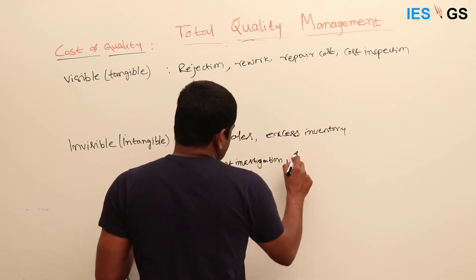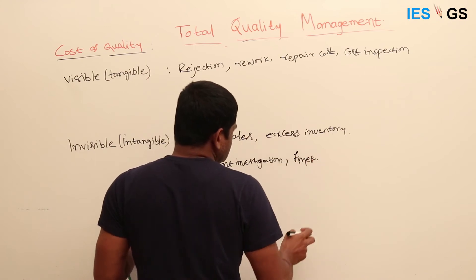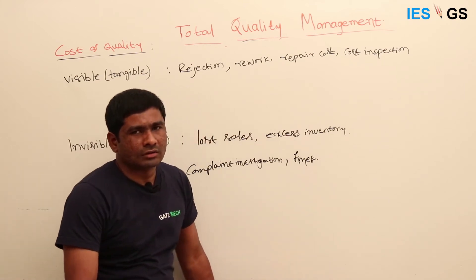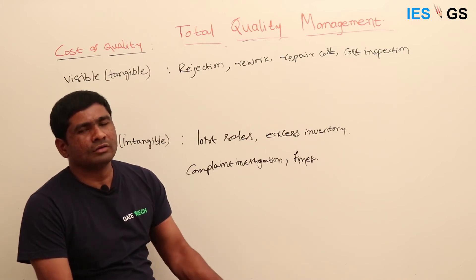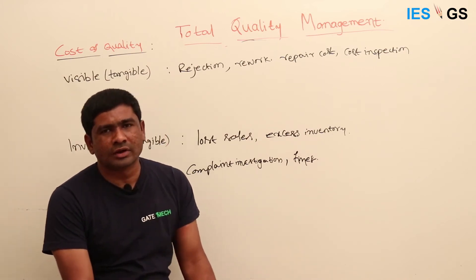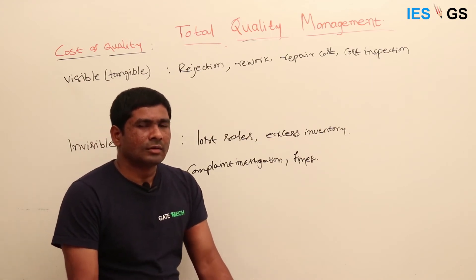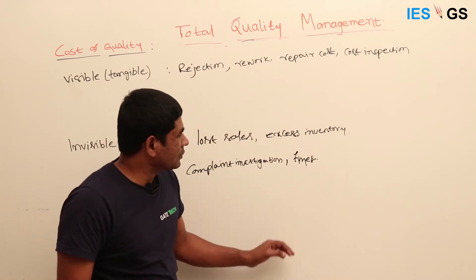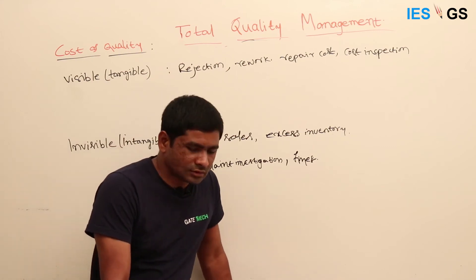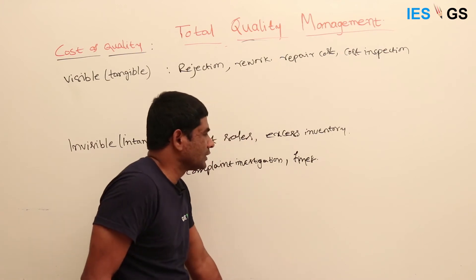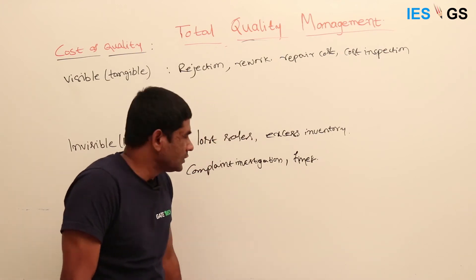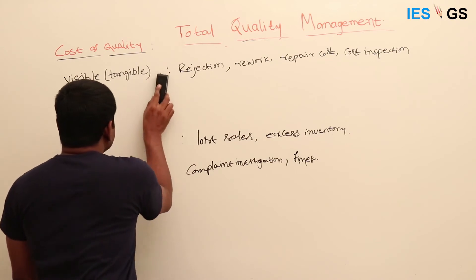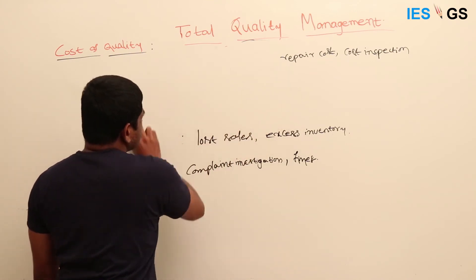Another invisible cost is fines. Especially in the US, consumer rights are very strong. If you promise something and your product is not up to that standard, they can go to court and make you pay huge damages. In India, similar laws exist but the courts are not as strict in this case. The legal fees you incur to face these cases also come under invisible costs.